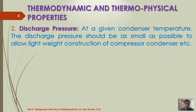The second point is discharge pressure. At a given condenser temperature, the discharge pressure should be as small as possible to allow lightweight construction of compressor, condenser, etc. When the maximum operating pressure is low, the tube thickness required for the condenser and the material chosen for compressors need not be heavy. That means you can go for thinner tubes, which reduces the cost and the weight of the system.